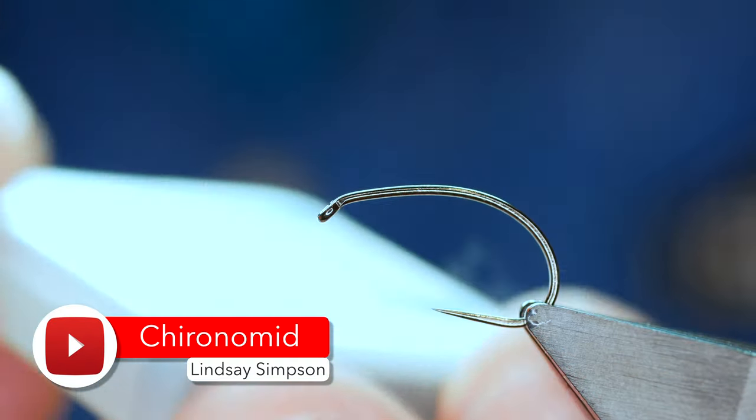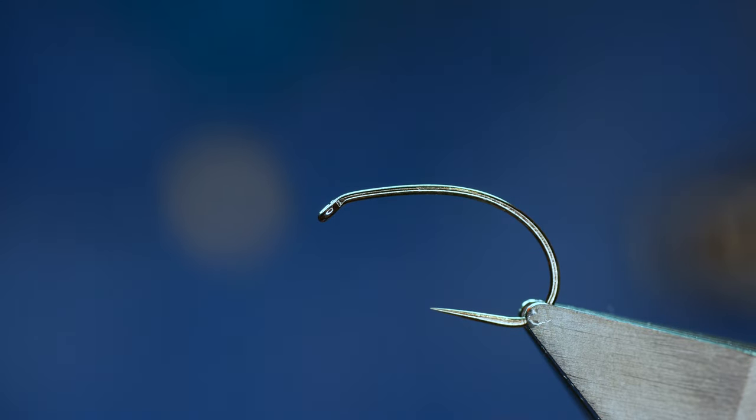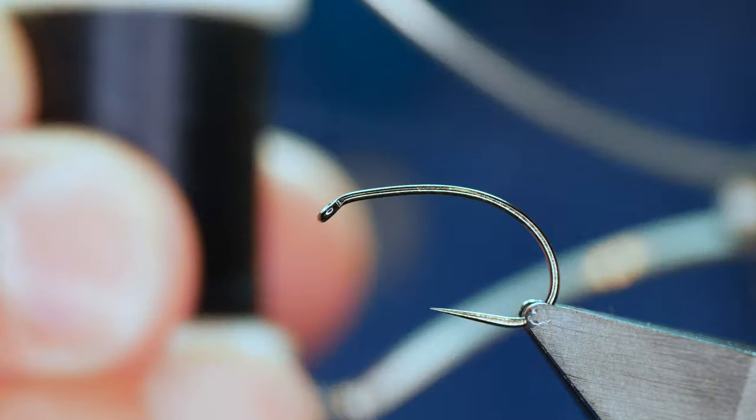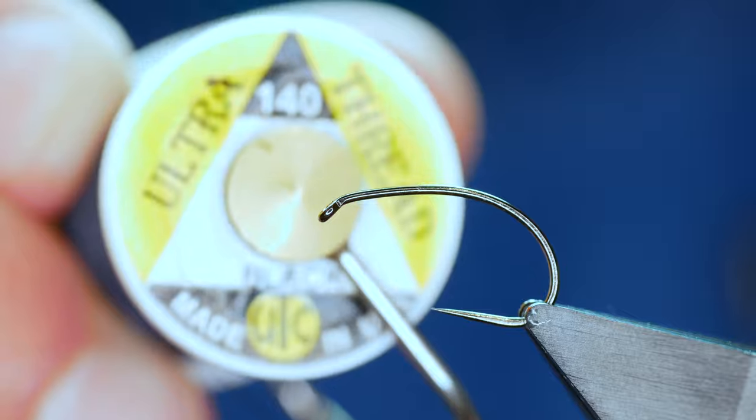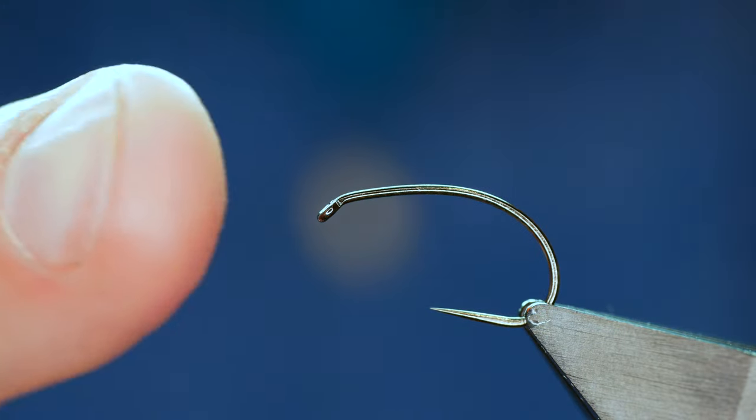The hook in the vise is a Hanak H300 barbless hook. This one's at size 10 and it's on a medium wire finished in black nickel. The thread I'm going to be using today is from UTC, it's a 140 denier and as you can see it's a black thread.